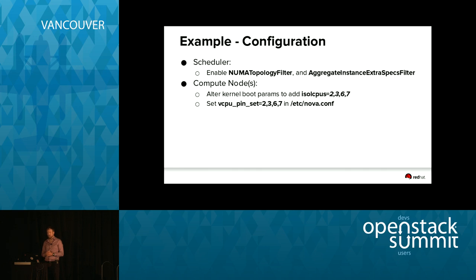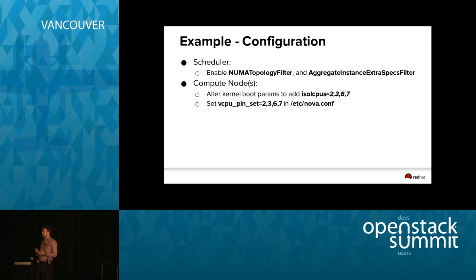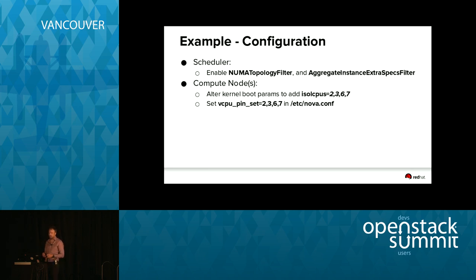Walking through a configuration example for CPU pinning with that hardware layout: first I enable the NUMATopologyFilter and typically the AggregateInstanceExtraSpecsFilter as well. The NUMA topology filter accounts for host topology; the aggregate filter is used to segregate machines running guests that need dedicated resourcing from the rest. In this example I'm reserving CPU cores 2, 3, 6, and 7 for running guests — reserving two cores out of four on each node. This is a fairly contrived example.